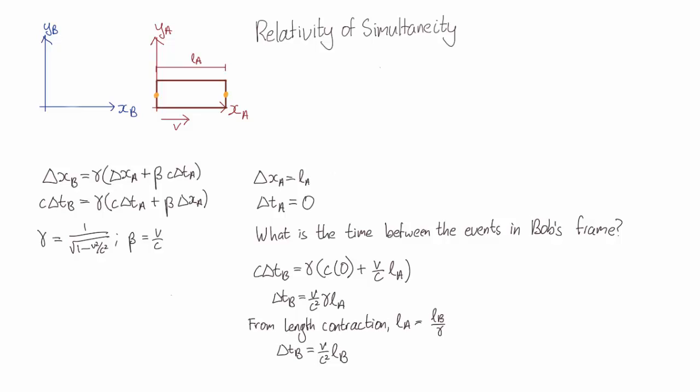So now we have a quantitative result for the time difference that Bob measures between two events that are simultaneous in Alice's frame.